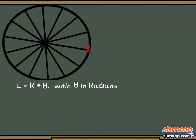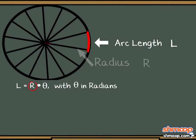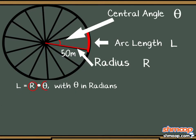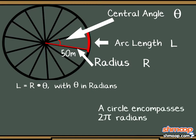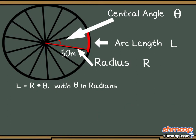To find the arc length of the desired sector, we need the radius and central angle in radians. An entire circle encompasses 2π radians, and the king wants it divided 14 ways, so the central angle of each sector would be 2π divided by 14.